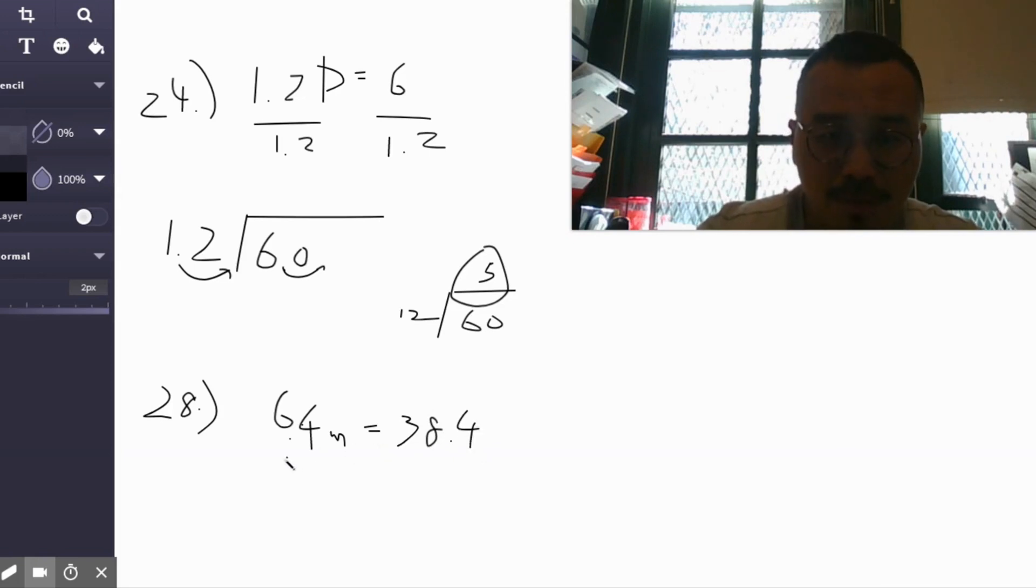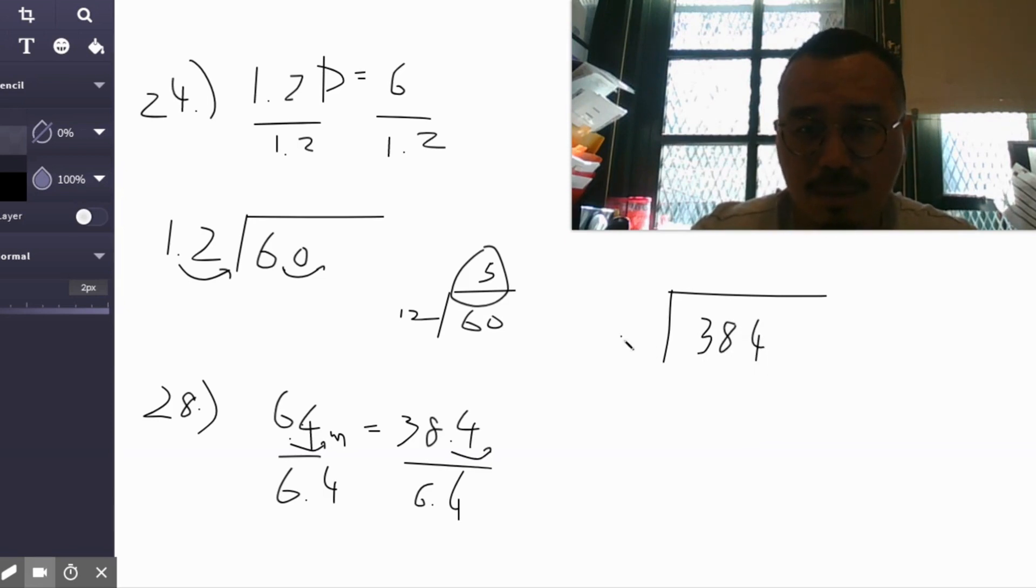Problem 28: 6.4m. You're going to divide both sides by 6.4. Let's see, I'm going to use this because it might be a very long question. Here you have to move one place to the right, and so does this. 384 divided by 64.